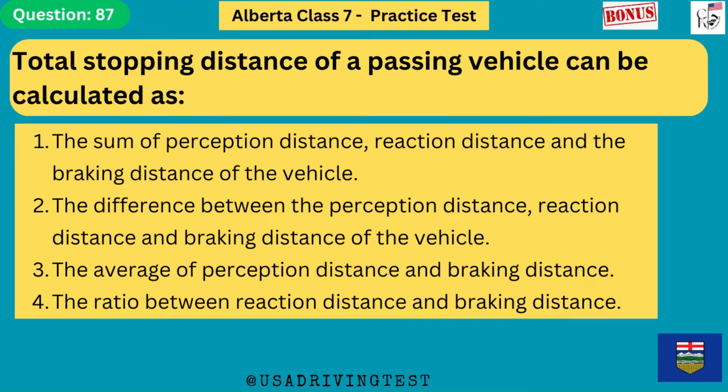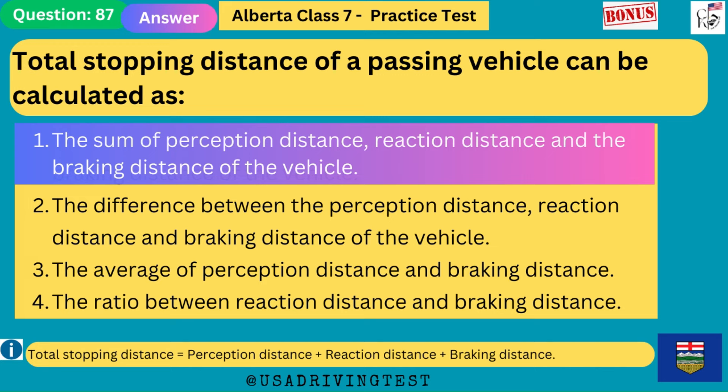Total stopping distance of a passing vehicle can be calculated as: 1. The sum of perception distance, reaction distance and the braking distance of the vehicle. 2. The difference between perception distance, reaction distance and braking distance. 3. The average of perception distance and braking distance. 4. The ratio between reaction distance and braking distance. The answer is 1: the sum of perception distance, reaction distance and the braking distance. Total stopping distance equals perception distance plus reaction distance plus braking distance.